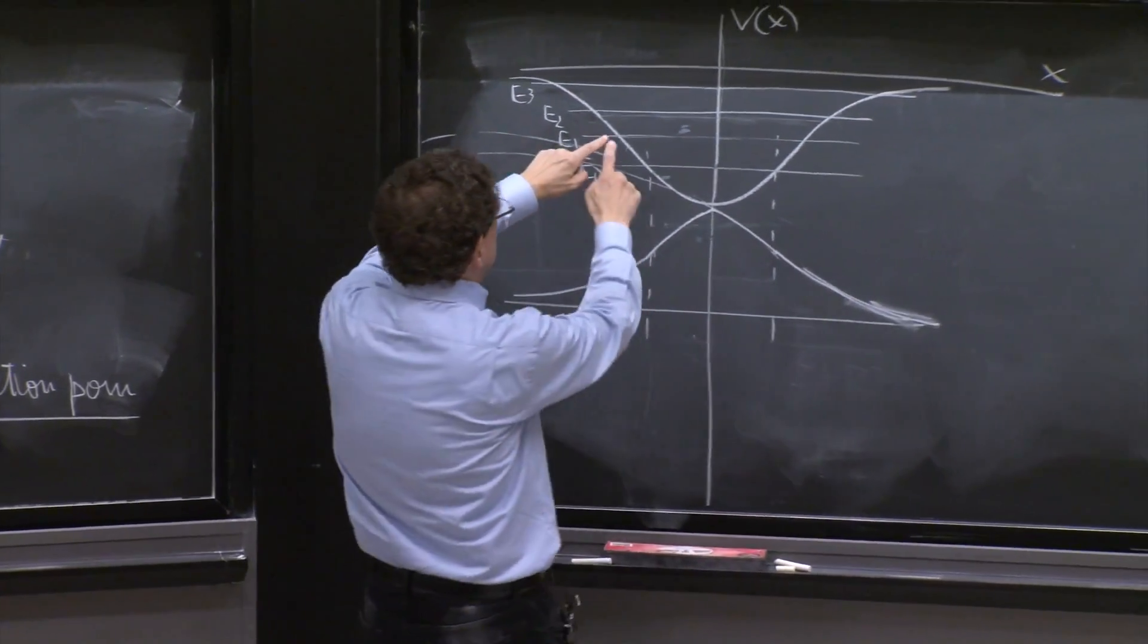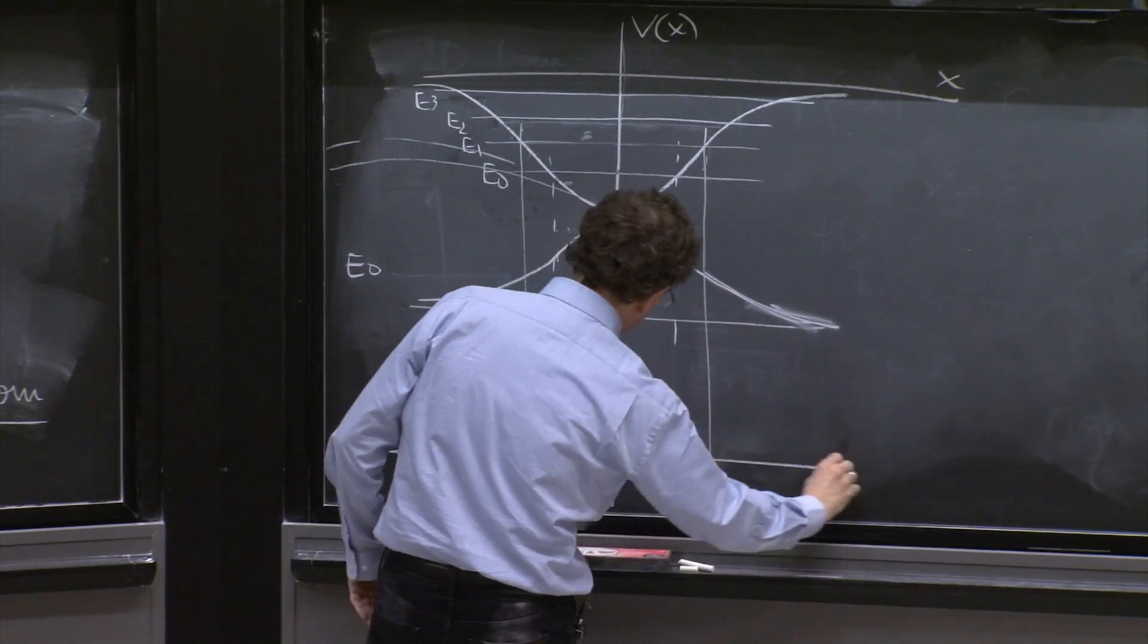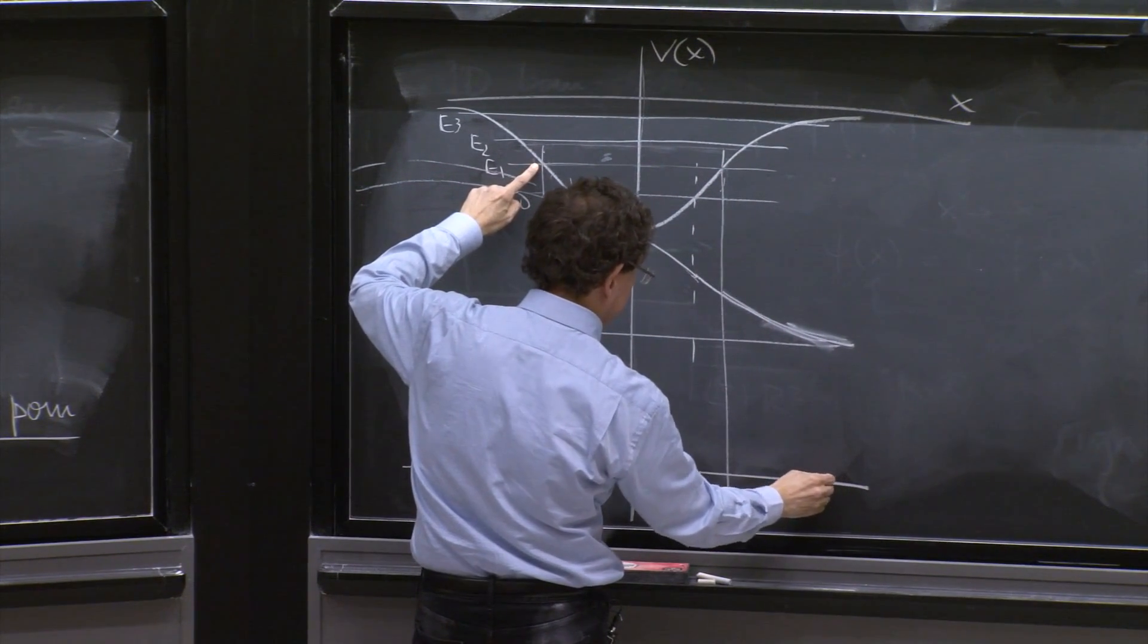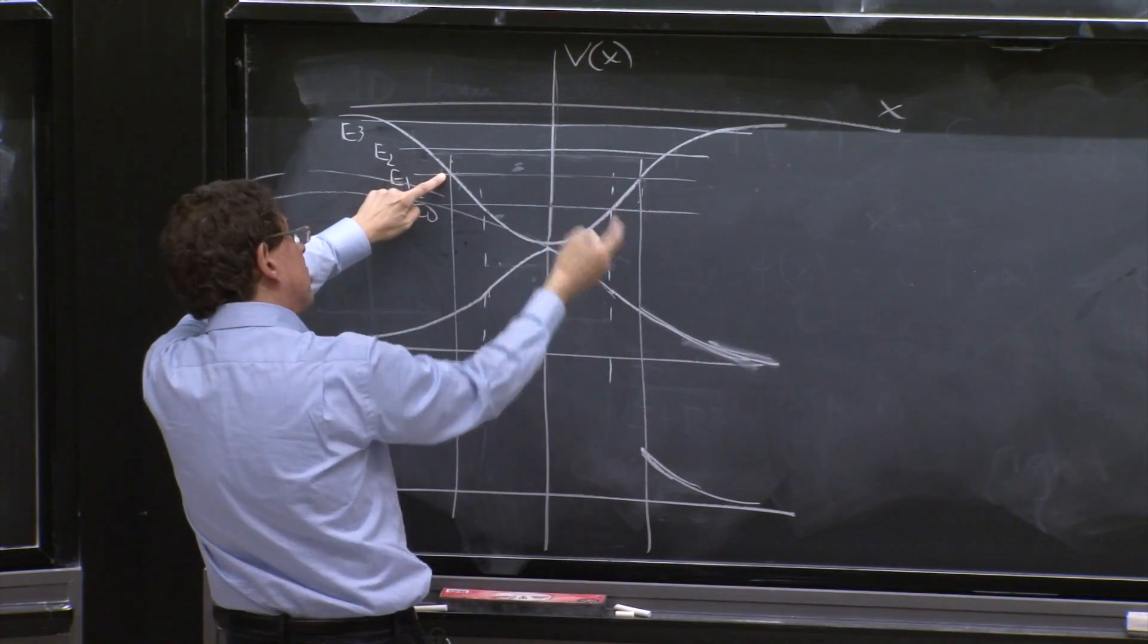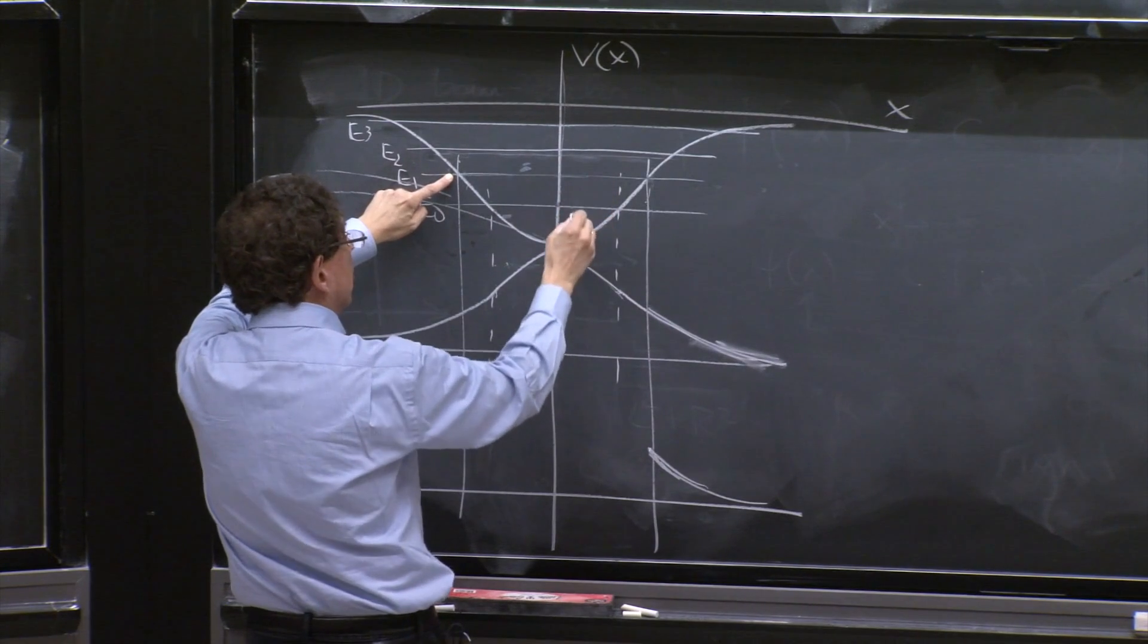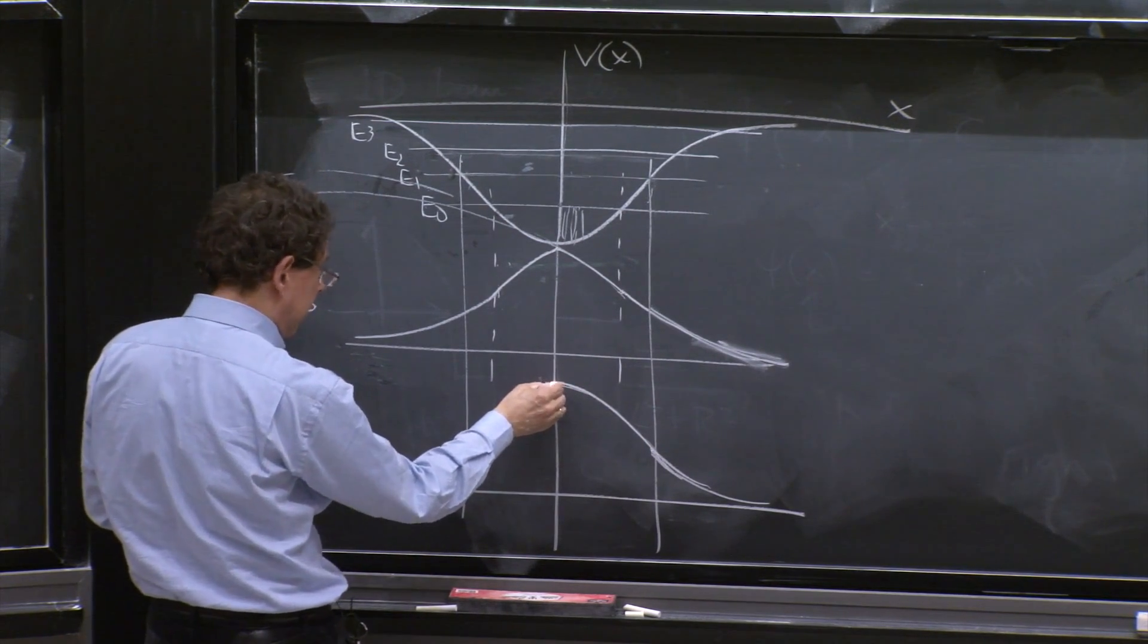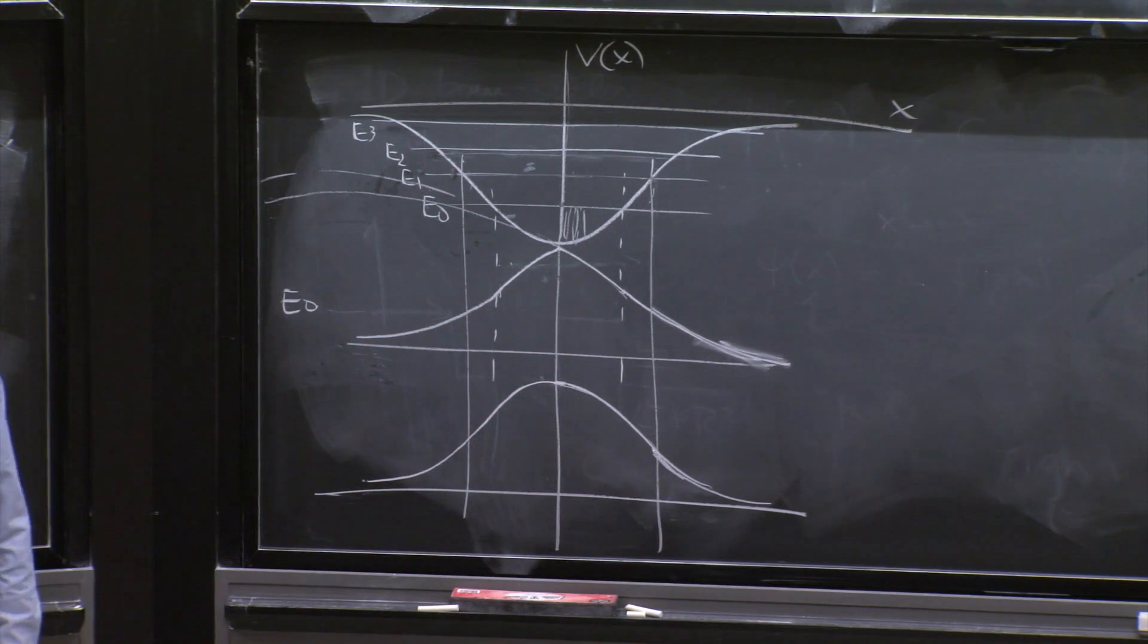On the other hand, if we try the next one, maybe the turning points would be here. Well, now the forbidden energies are over here. Now you have a turning point here, and the curvature is negative. The second derivative is curvature, and it's larger than it was here. Here it was small, here it's larger, so it's going to curve faster. Maybe, if you get the E1 right, it will curve enough so it is flat here, in which case the other side will match nicely, and you've got the solution.